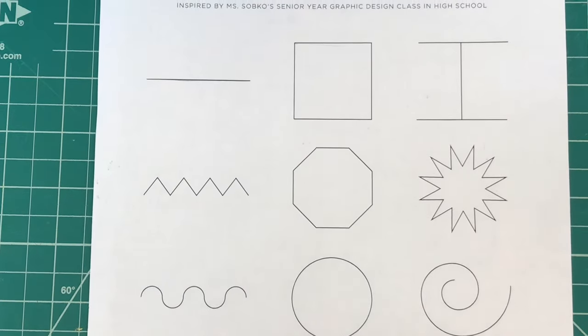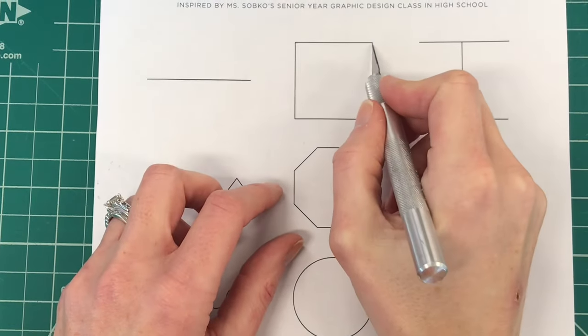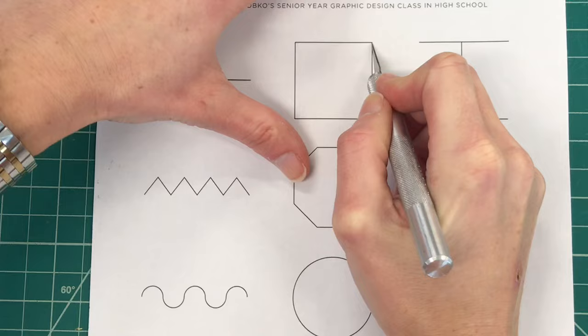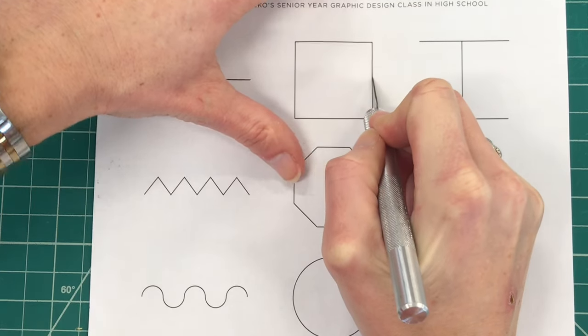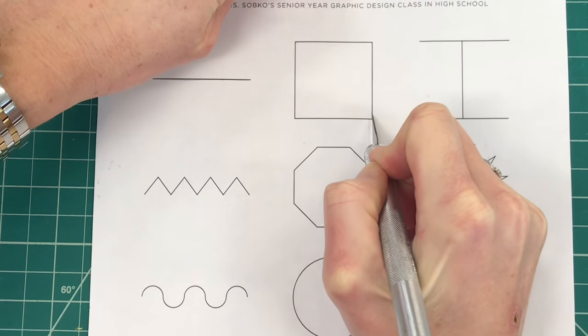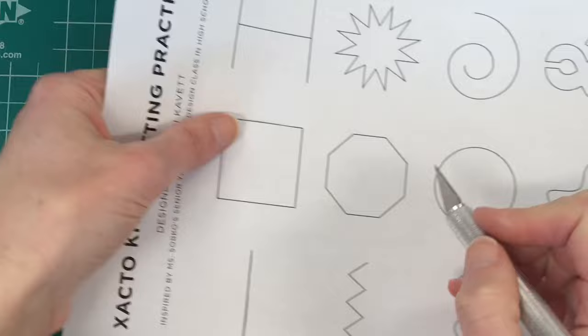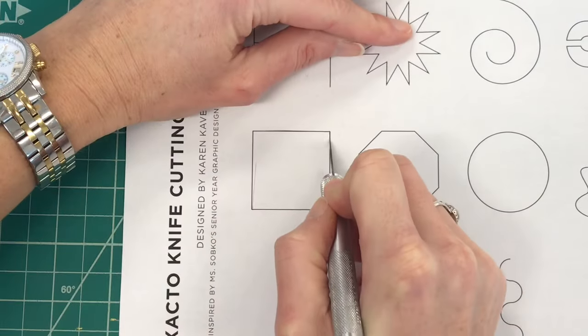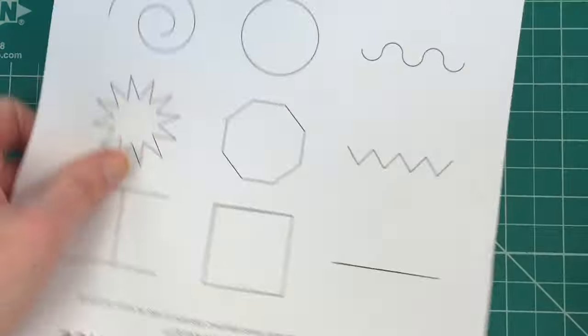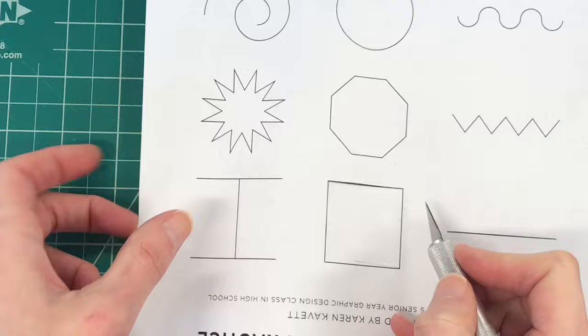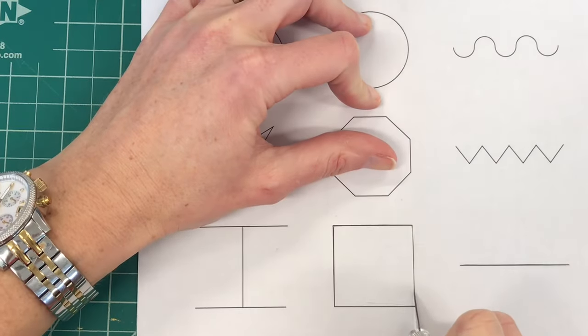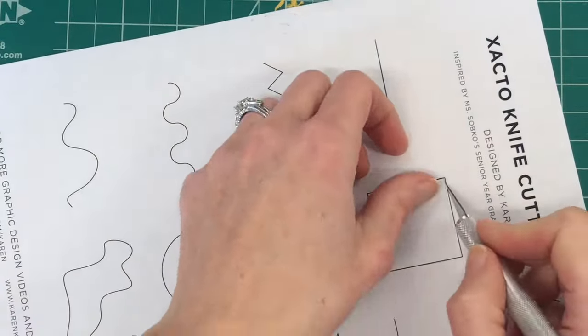You can watch how when I cut out this square I turn my paper instead of my blade. I keep my fingers out of the way because I don't want to cut myself. I hold my paper down firmly with the hand I'm not cutting with, and then after I make a cut I just adjust the paper.